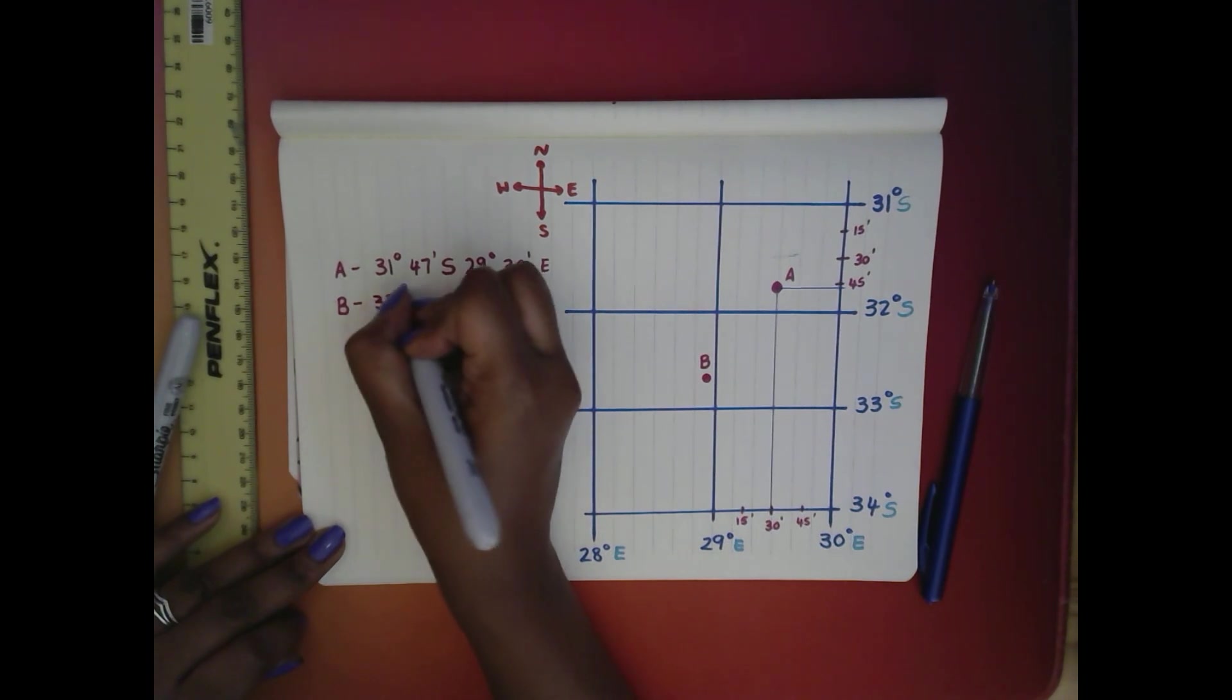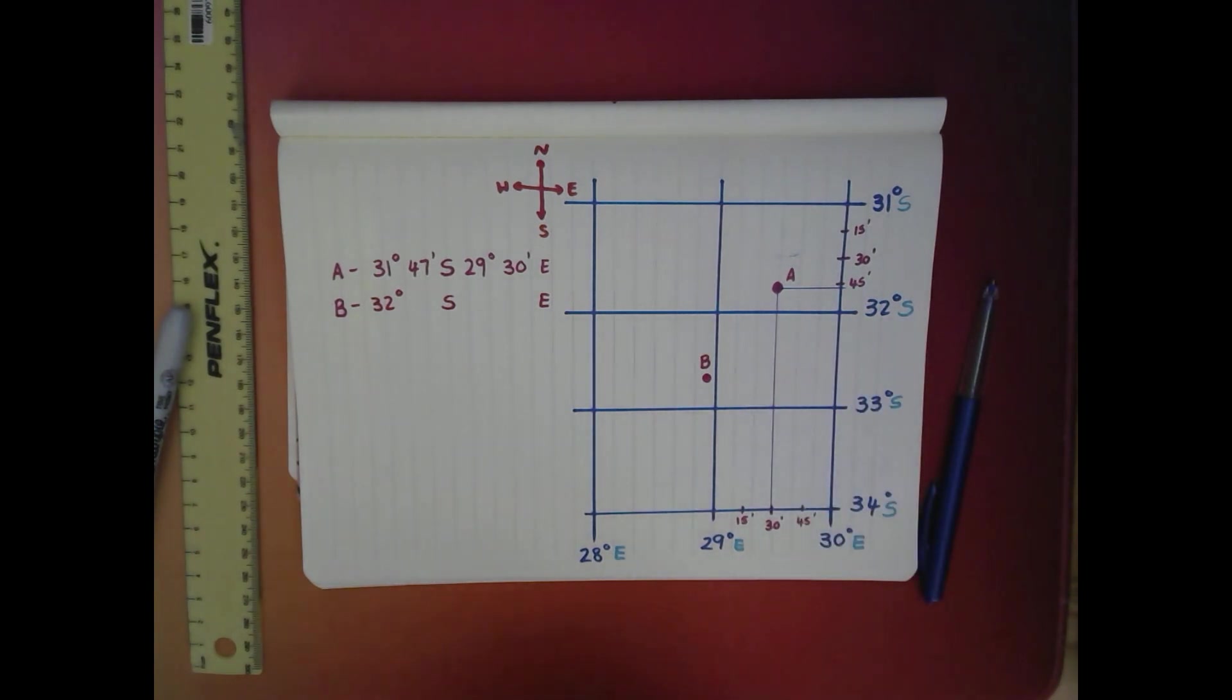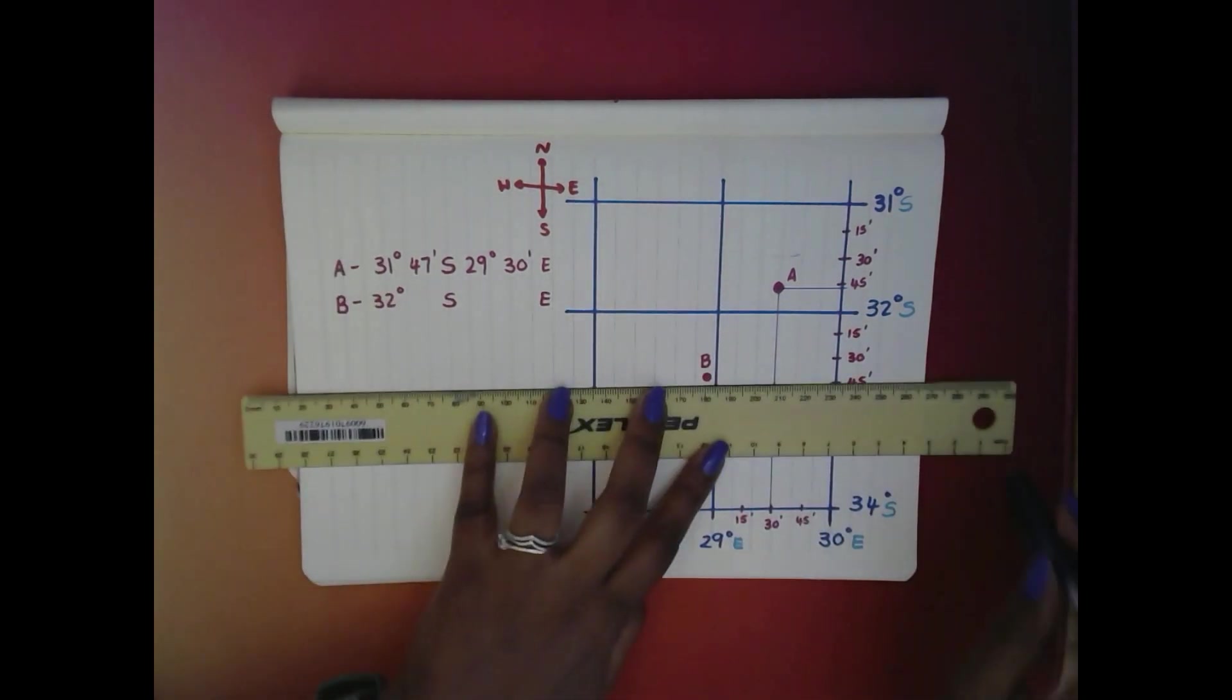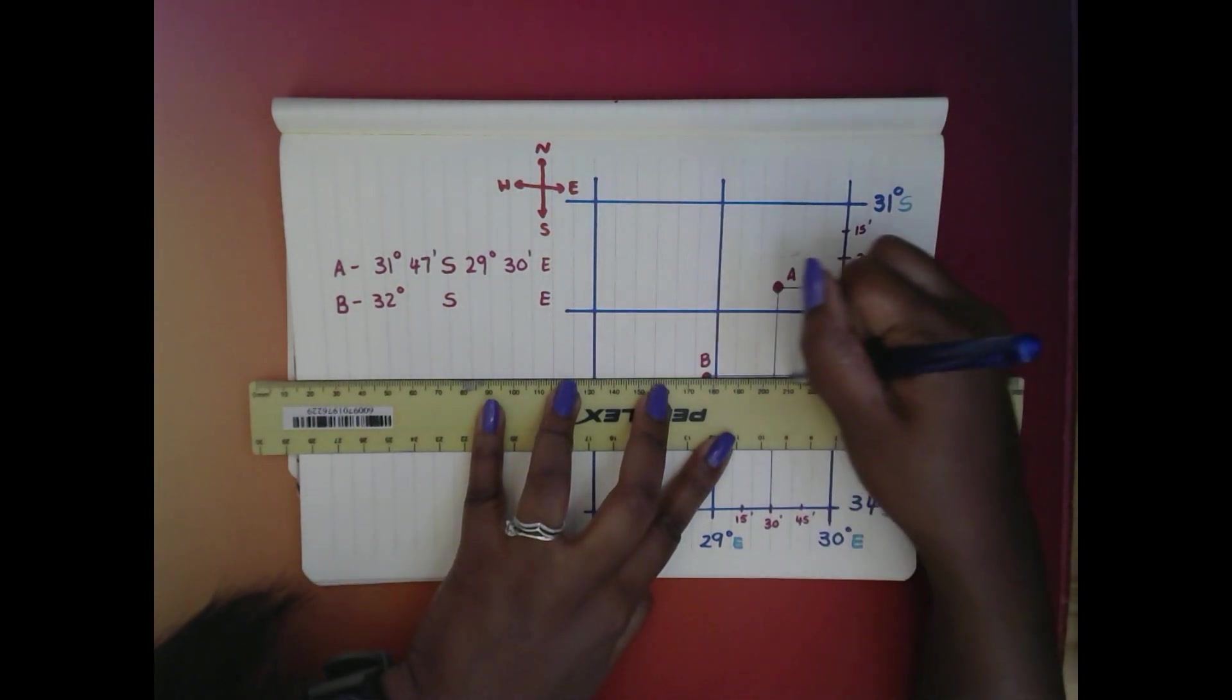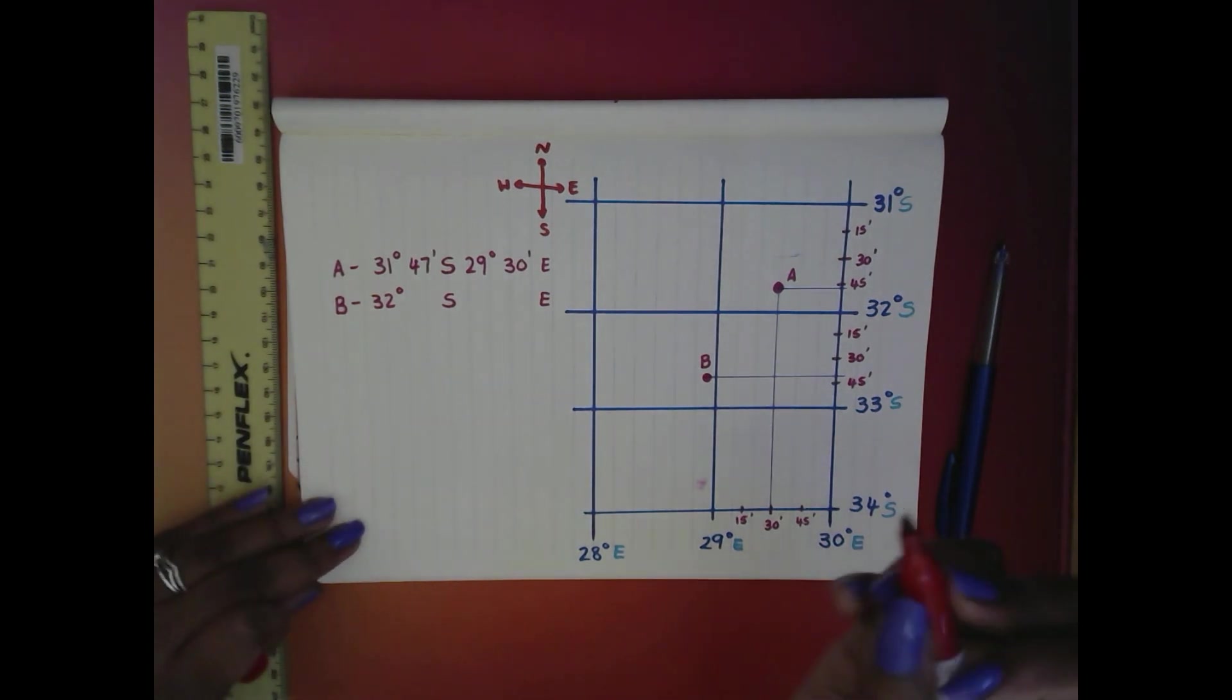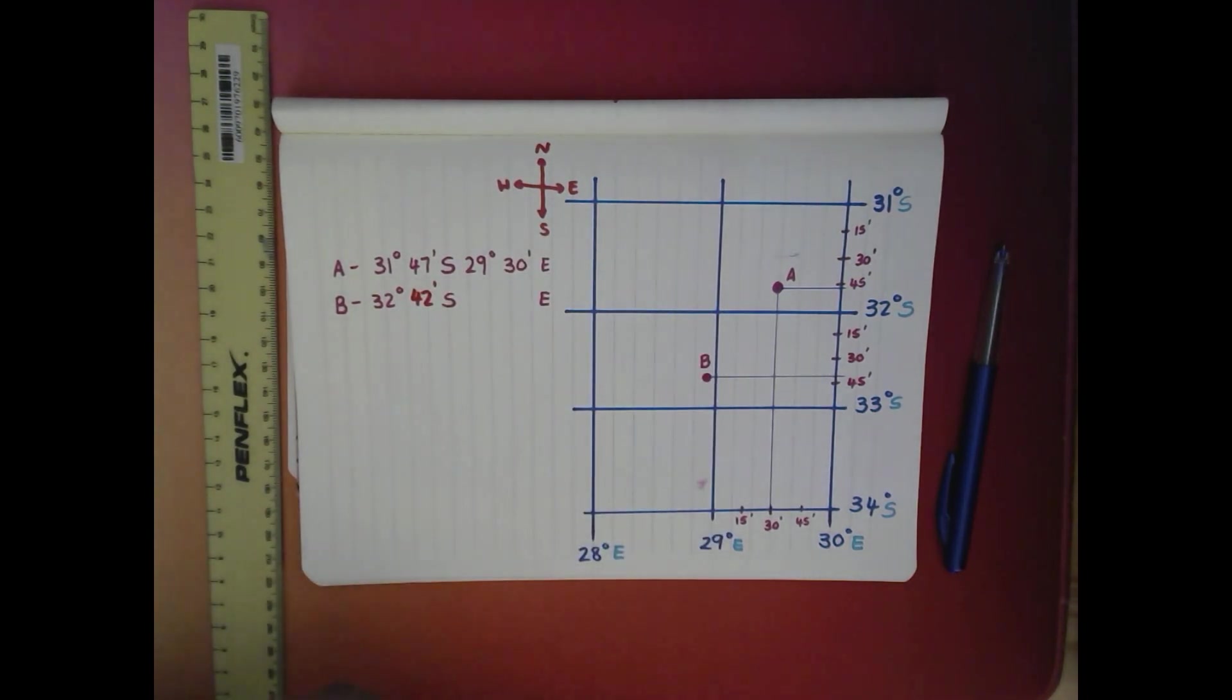But it's not just 32 degrees, it's 32 degrees and something minutes. So we're going to estimate. We're going to go to the middle of the block, we're going to say 30. The middle there, 15. And the middle there, 45. Going to take our ruler and my not-pencil, go to the center of a dot, and we're going to draw a straight line. And we can see that it's between 30 and 45, but it's much closer to the 45. So I'm going to say it's about 42 minutes.